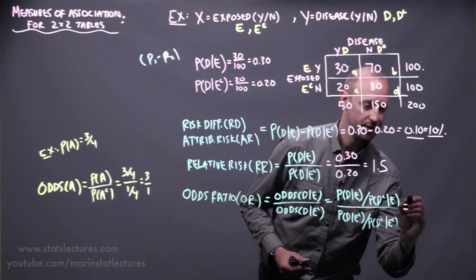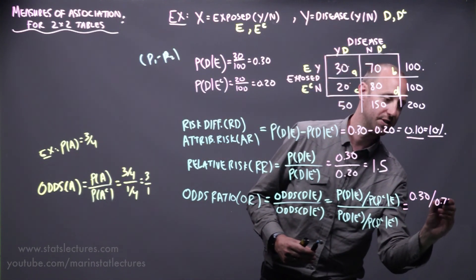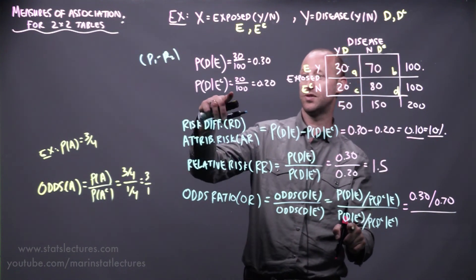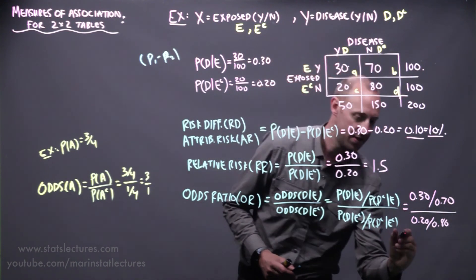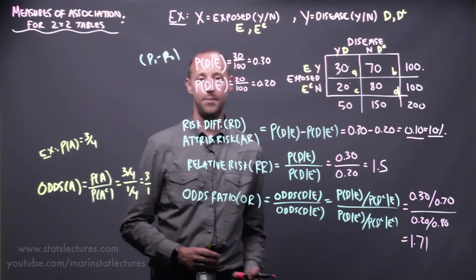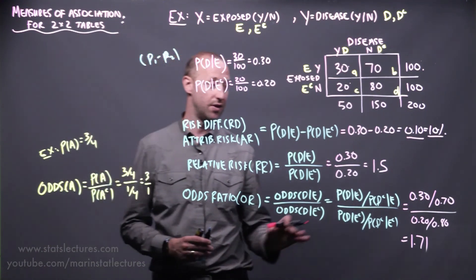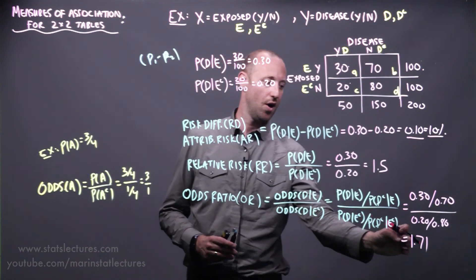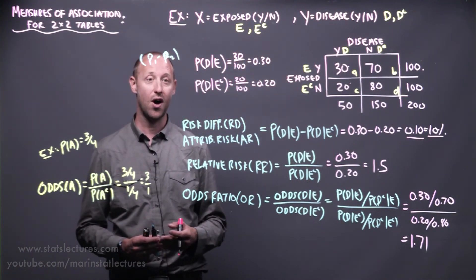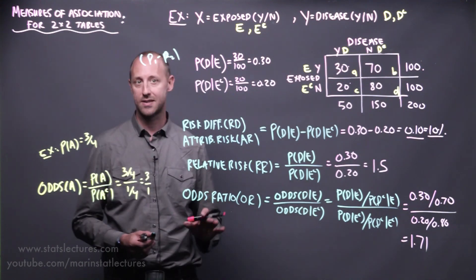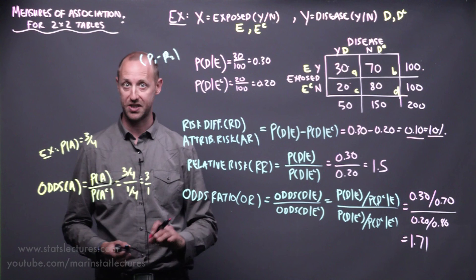If you work this out numerically, the probability of disease for someone who's exposed is 30%, the probability of not diseased is 70%. The probability of disease for someone who is not exposed is 20%, so the probability of not having the disease is 80%. If we work this out, it comes out to be 1.71. Pretty similar interpretation as the relative risk, but it's stated in terms of odds rather than probabilities. The odds of disease for someone who's exposed are 1.71 times the odds of someone who's not exposed. Or if we subtract 1 from that, for someone who's exposed, the odds of disease increase by 71%. And as we noted for the other measures, this is just an estimate, we can build a confidence interval for it, we can test the hypothesis for it, test if it's significantly different from one.